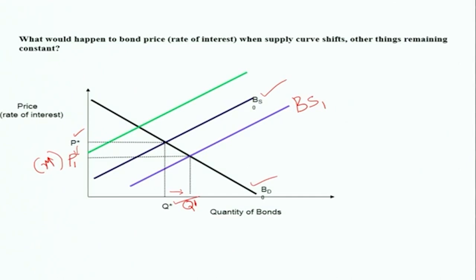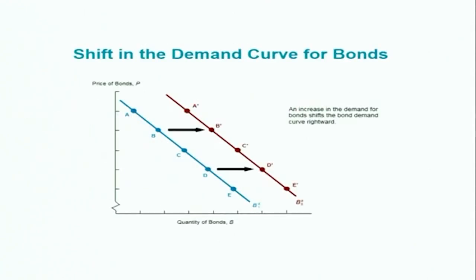In contrast, when the supply curve shifts leftwards — maybe the government's fiscal condition is very sound and healthy — they will be supplying fewer bonds, meaning they are borrowing less from the market. As a result, there is less supply, so the price will be increasing and the rate of interest will be declining in the market.